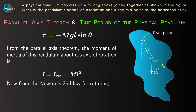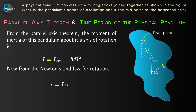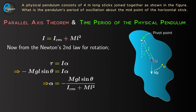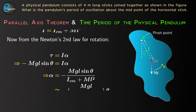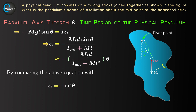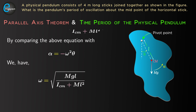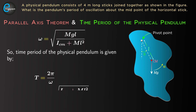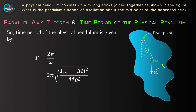From Newton's second law for rotation, tau equal to I alpha, which gives minus MgL sin theta equal to I alpha, so alpha equals minus MgL sin theta upon ICM plus Ml squared. For small theta, sin theta is approximately equal to theta, so alpha equals minus MgL upon ICM plus Ml squared times theta. Comparing with alpha equal to minus omega squared theta, we get omega equal to the square root of MgL upon ICM plus Ml squared. Therefore, the time period is T equal to 2 pi upon omega, which equals 2 pi times the square root of ICM plus Ml squared upon MgL.